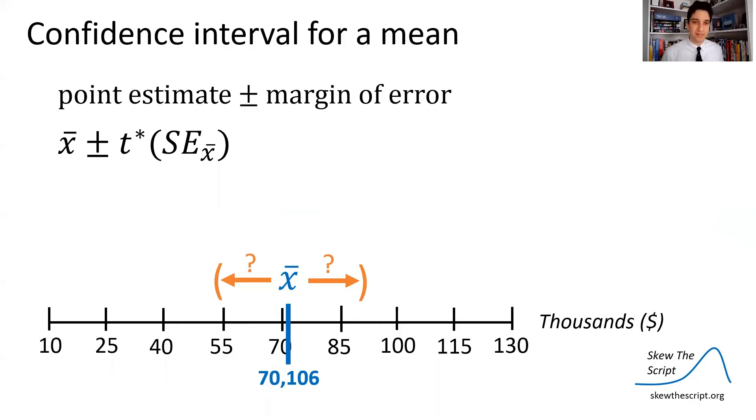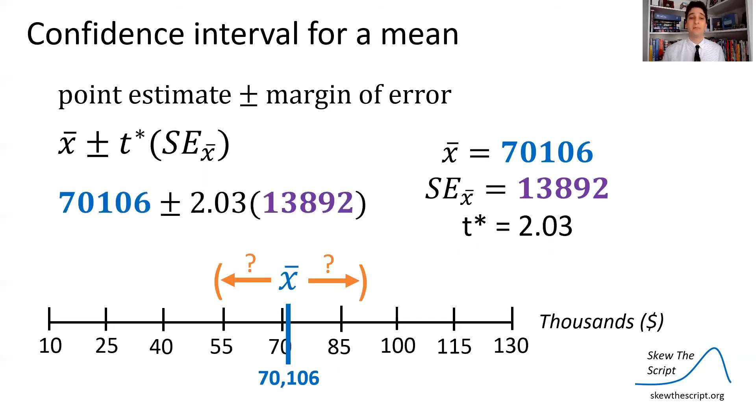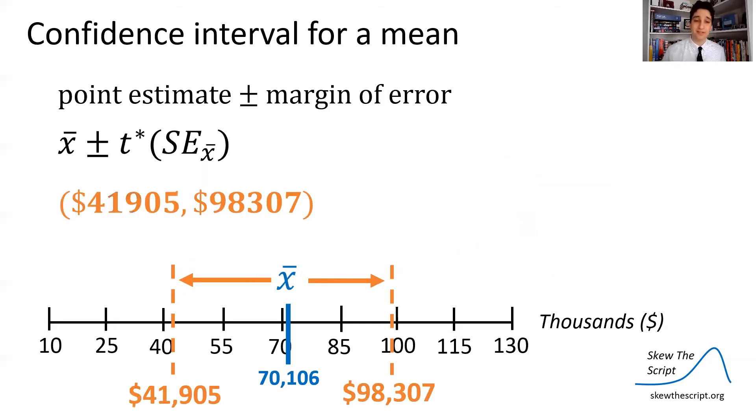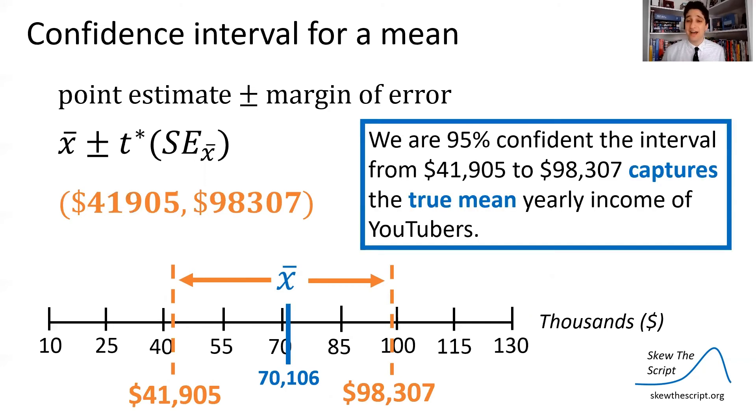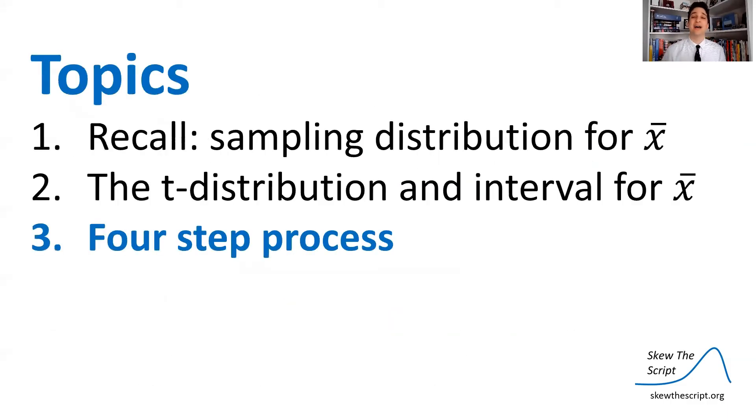So we have the formula for a confidence interval for mean, and it's always going to be the point estimate. In this case, the sample mean plus or minus the critical value T star times the standard error from our sampling distribution. So let's plug in what we know. We have the sample mean, we have the standard error from before, and now we calculated the T star. We need to go 2.03 standard errors out. Plug those in. We get an interval with margins of error of about 28,000. So our interval is from 41,900 to about 98,300. So we are 95% confident the interval from 41,900 to 98,300 captures the true mean yearly income of YouTubers. A big range, but we're confident that's going to capture the true mean income of YouTubers.